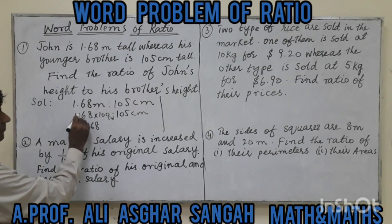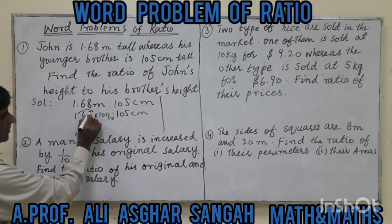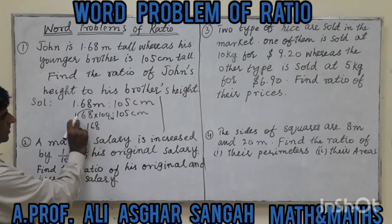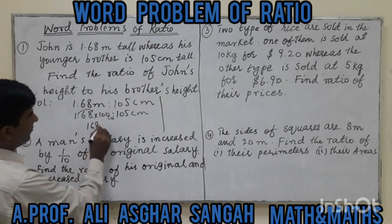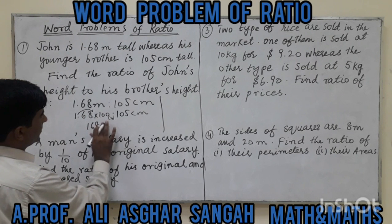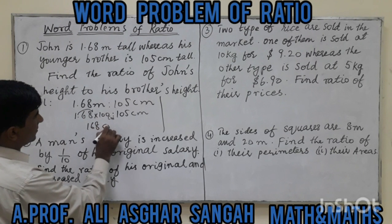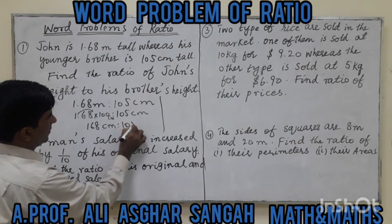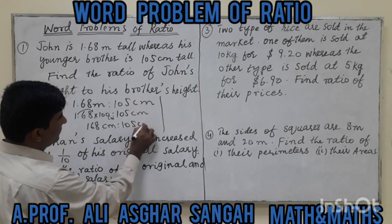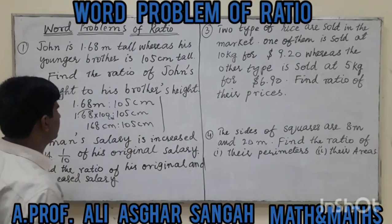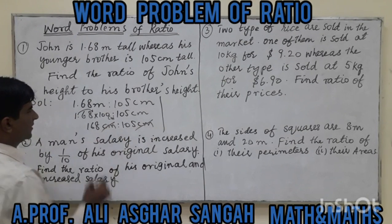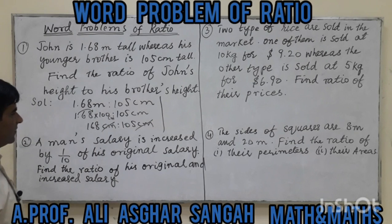Now we set up the ratio: 168 centimeters to 105 centimeters. The centimeter units cancel out, leaving us with the ratio 168 to 105.